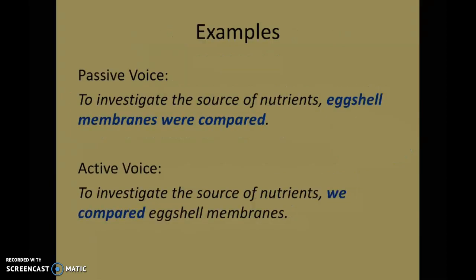A couple more examples I often see in science writing, particularly in journal writing about the method section: 'To investigate the source of nutrients, actual membranes were compared.' It's not wrong, but if you really want to be clearer to your reader, tell them who's doing the comparison. If you're a team of researchers, here is the revision in active voice: 'To investigate the source of nutrients, we compared actual membranes.'